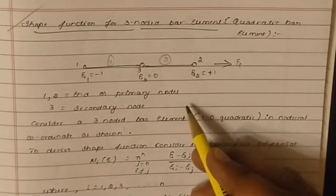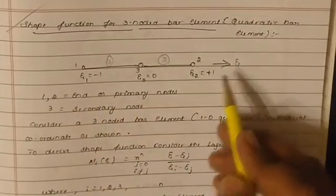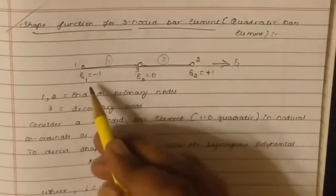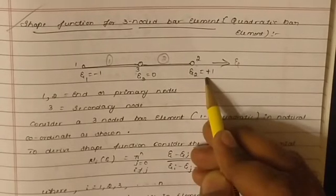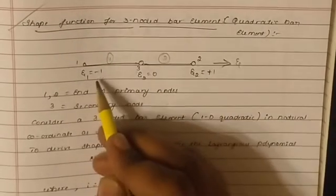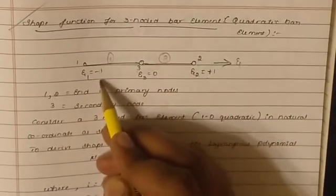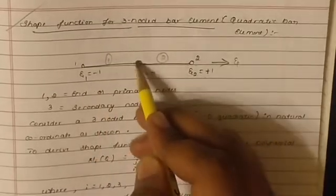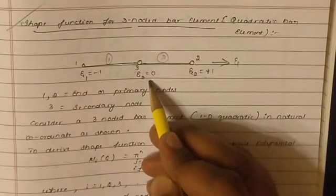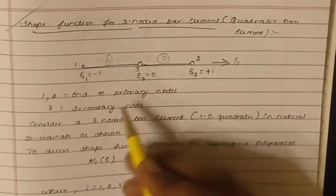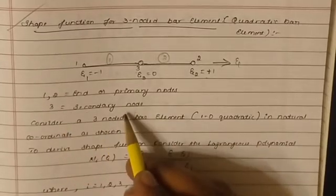Since it's a 3-noded bar element, in the natural coordinate system zeta always varies from minus 1 to plus 1. So node 1 is at minus 1, node 2 is at plus 1, and in between, node 3 will be at 0. Nodes 1 and 2 are the primary nodes; node 3 is the secondary node.